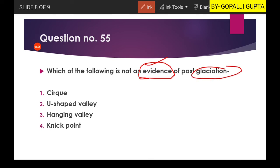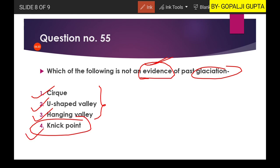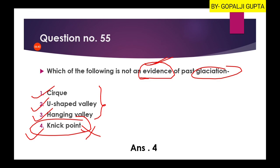Glacial evidence includes cirques, U-shaped valleys, and hanging valleys — these are glacial landforms. But a nick point is found by river or water action, which shows river action in the past, not glacial action. So option four is our right answer. That's all for today — in the next video we will see some more questions.